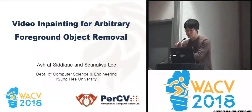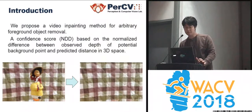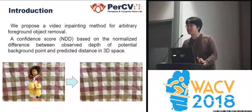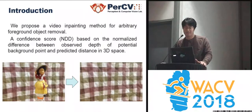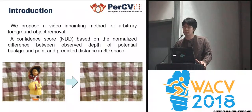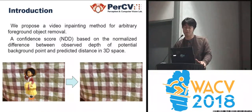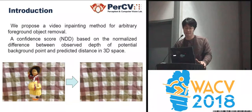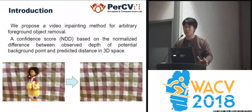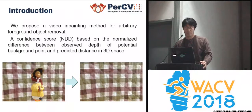The title of this work is Video Inpainting for Arbitrary Foreground Object Removal. The vision of this work is like this: we want to take a video of target objects, but accidentally or frequently we come to include an unexpected object in our video. In that case, we'd like to edit a video in a content manner, not a time-frame manner.